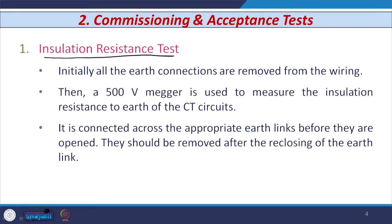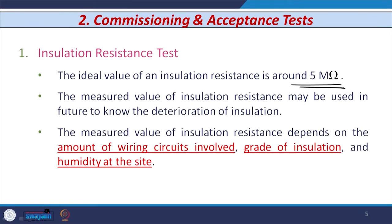The first test is known as the insulation resistance test. Initially, all the earth connections are removed from the wiring, then using a Megger of 500 volts or 1000 volts, the insulation resistance is measured relative to the earth of the current transformer circuit. The ideal value of the insulation resistance is around 5 mega ohm. The measured value can be used in the future to track deterioration, since after 2 or 4 or 6 years, this value may change.